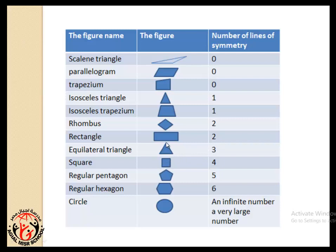Rectangle, two lines of symmetry. Square, four lines of symmetry. Regular pentagon, five lines of symmetry. Regular hexagon, six lines of symmetry. And circle, an infinite number, a very large number.